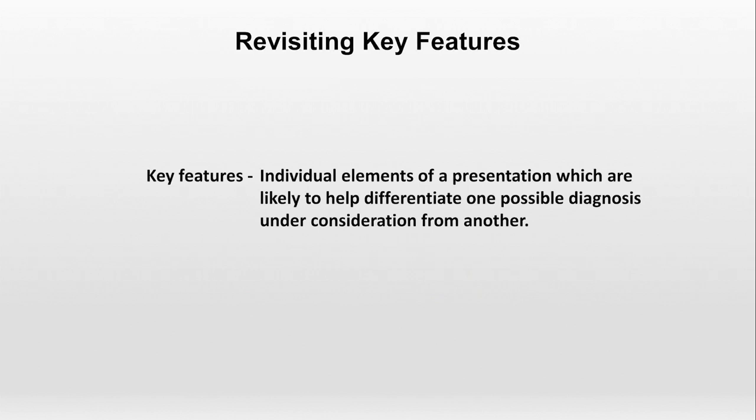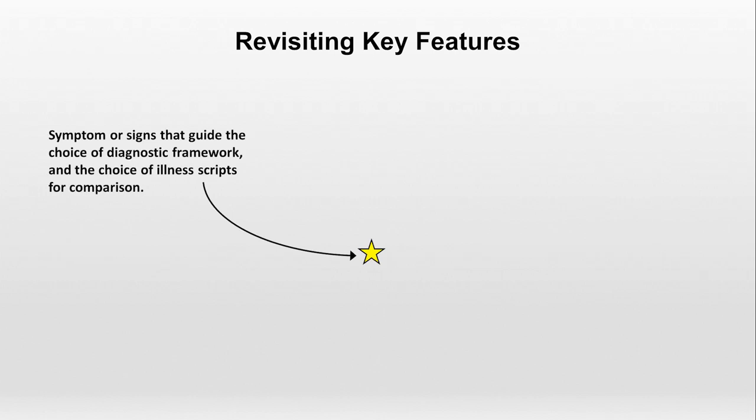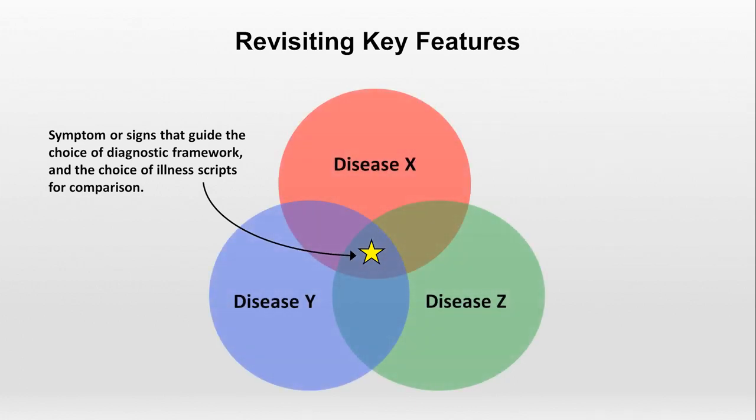Now let's consider what is the most important information to keep on an illness script. To answer this, we'll need to revisit the concept of key features. Key features are individual elements of a presentation which are likely to help differentiate one possible diagnosis under consideration from another. Imagine a patient presenting with a symptom or exam finding — represented by a star — which will guide the choice of diagnostic framework, from which we will pull several possible diseases and their illness scripts for comparison. These diseases are composed of sets of presentation features, some of which overlap with others.